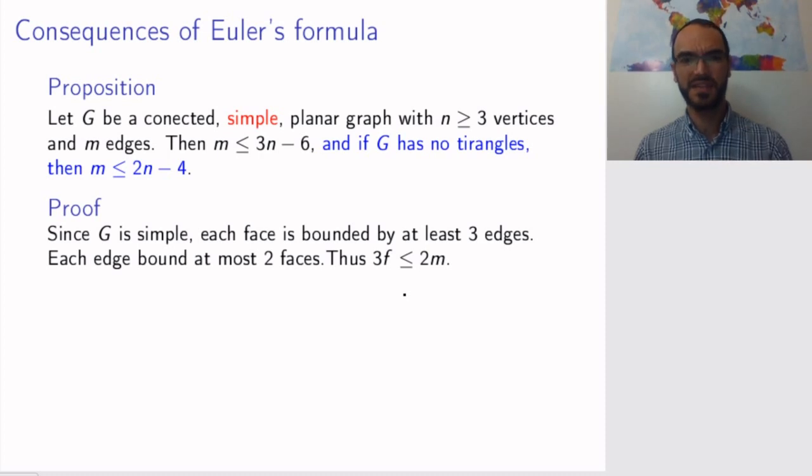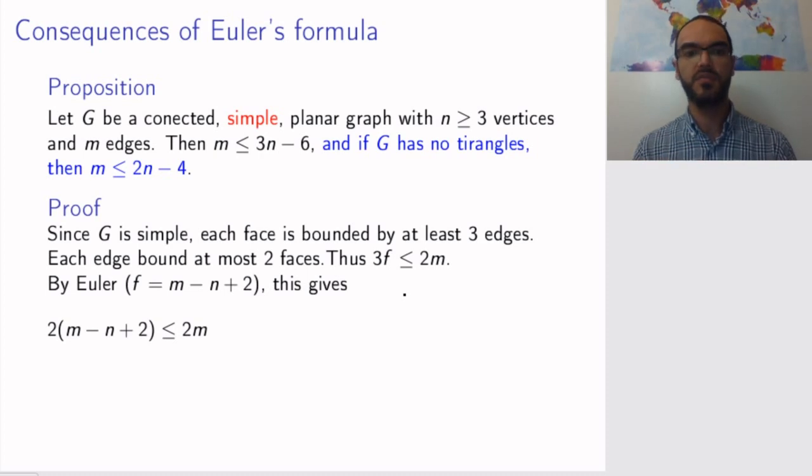This might sound a bit tricky to get your head around. It was for me. So if that's the case, pause or stop later and draw some pictures to convince yourself that this is true. But anyway, now assuming that we are convinced that three times the number of faces is at most twice the number of edges, now we use Euler's formula. So Euler's formula, when we solve for f, says that f is equal to m minus n plus 2. So we plug this into this formula and this is supposed to be a 3.